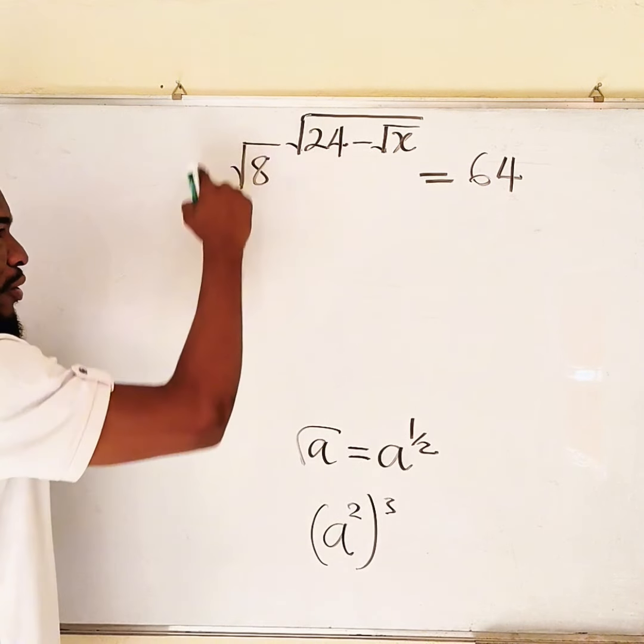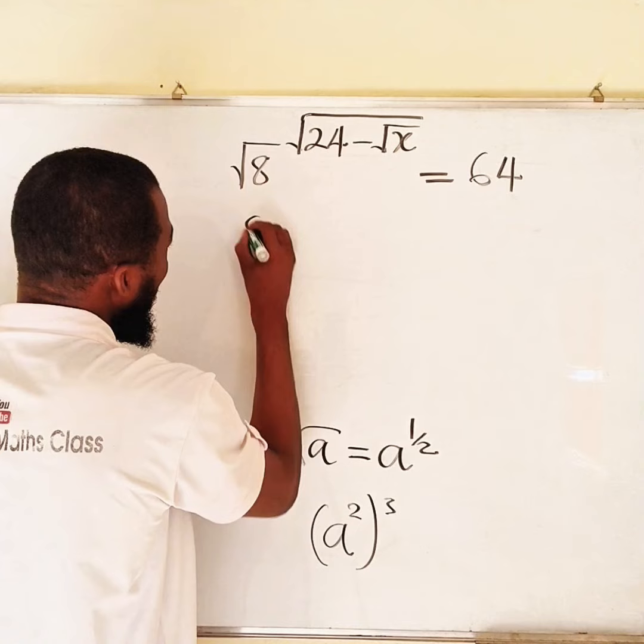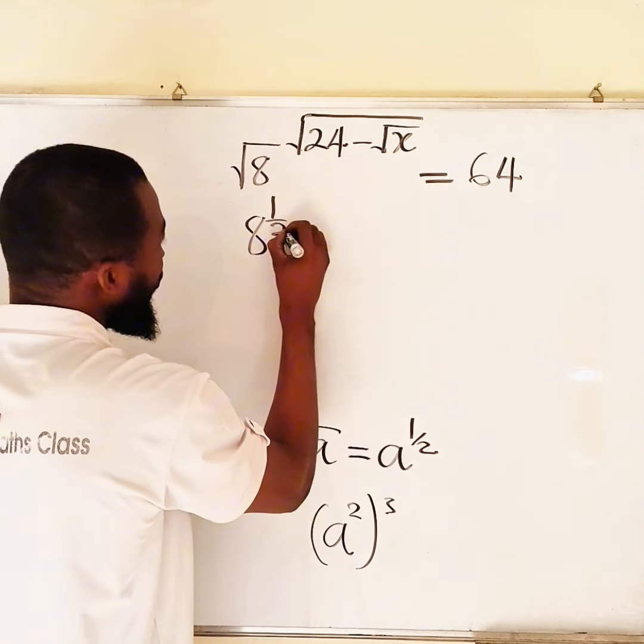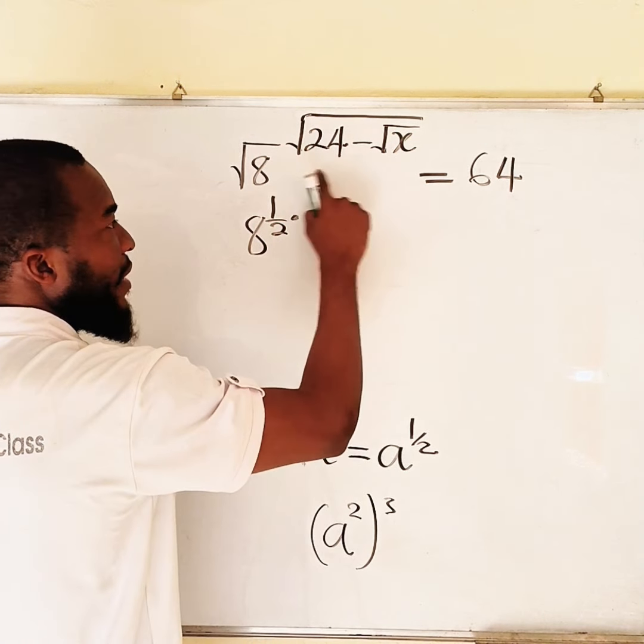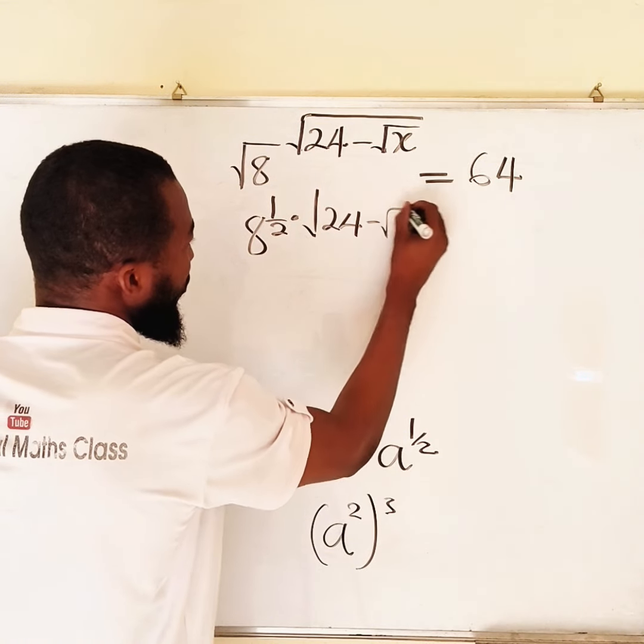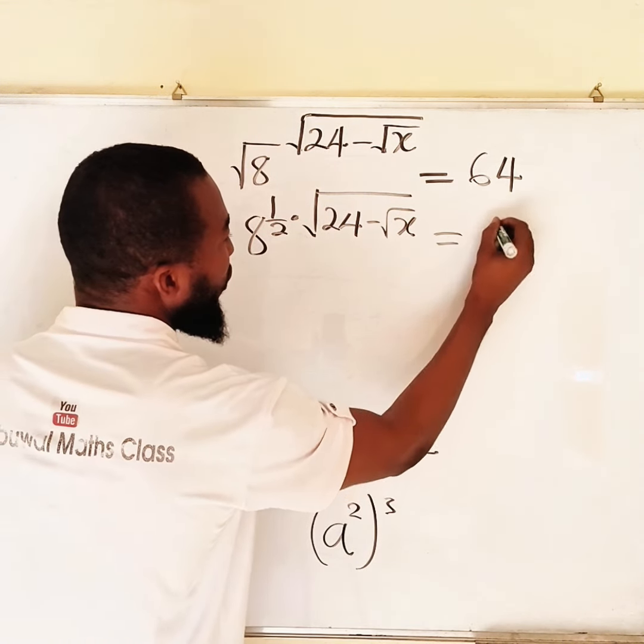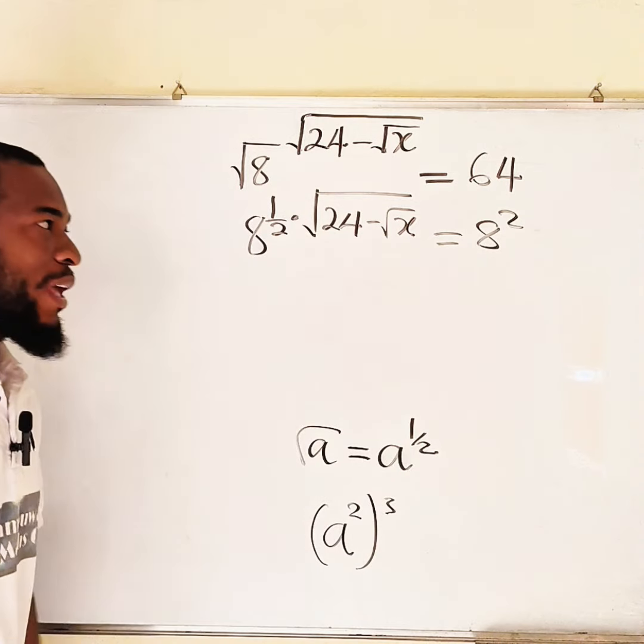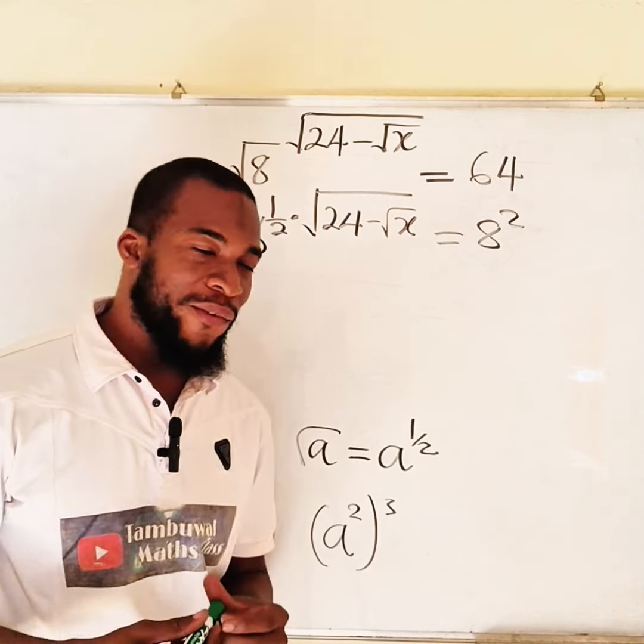So let me write square root of 8 as 8 raised to the power of 1 over 2. But we have an existing exponent, which is square root of 24 minus square root of x. And this is equal to 8 squared, as I told you earlier, because 8 squared is 64.